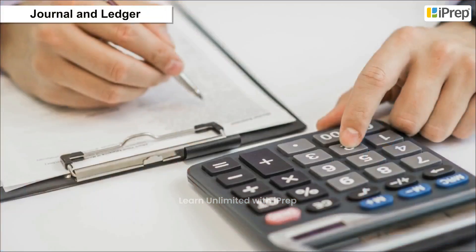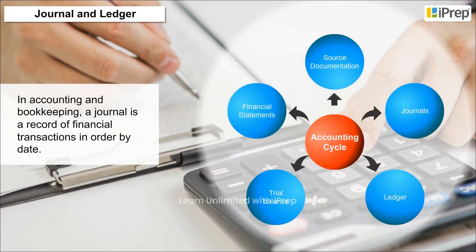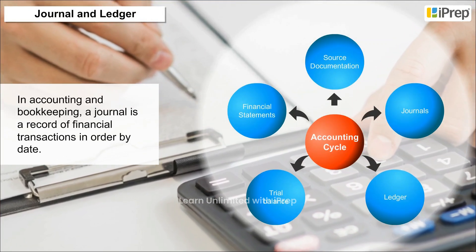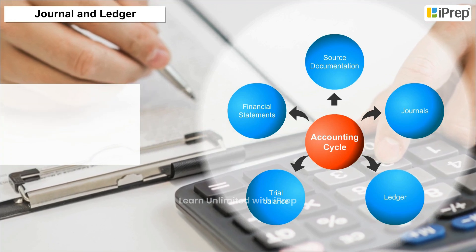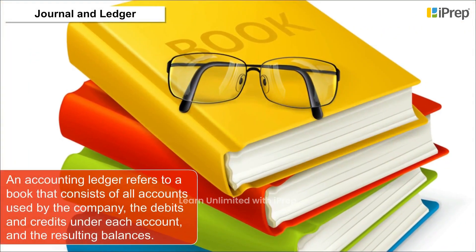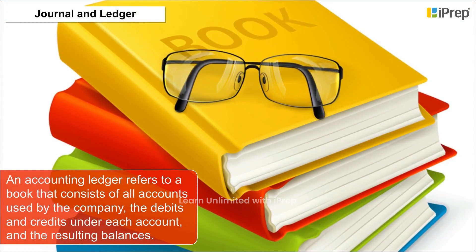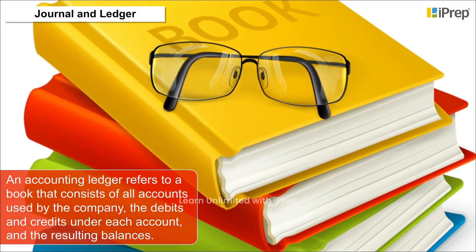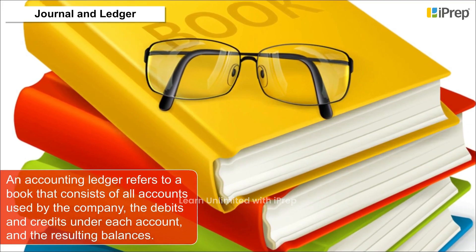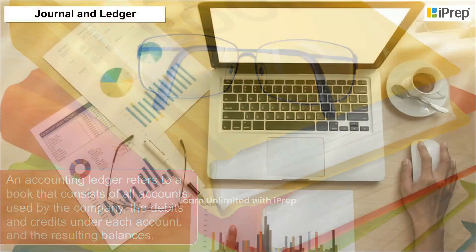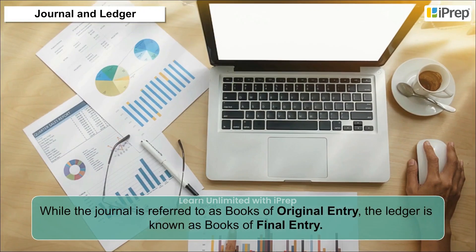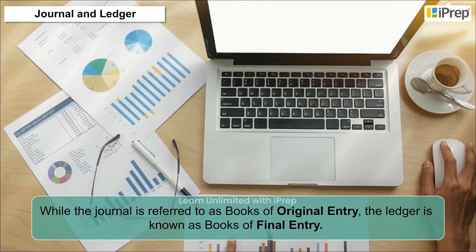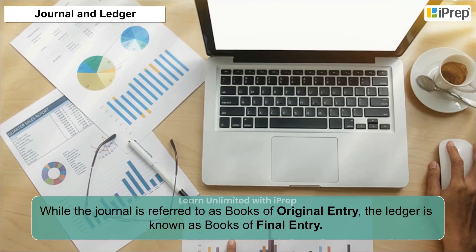Journal and Ledger. In accounting and bookkeeping, a journal is a record of financial transactions in order by date. An accounting ledger refers to a book that consists of all accounts used by the company, the debits and credits under each account, and the resulting balances. While the journal is referred to as books of original entry, the ledger is known as books of final entry.